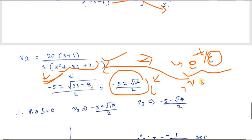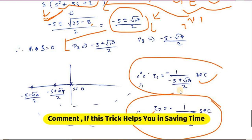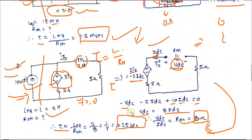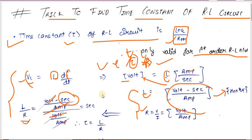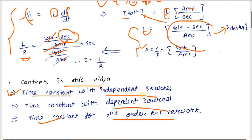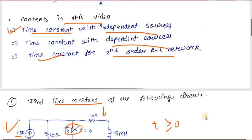From the two roots, we get two time constants for this second-order RL network: τ₁ = −1 / [(−5 + √17)/2] and τ₂ = −1 / [(−5 − √17)/2] seconds. A first-order RL network yields one time constant; a second-order RL network yields two. Use the L_equivalent/Rth formula for first-order circuits and Laplace transform for second-order and higher. Exam questions on second-order RL circuits are increasingly common, so be well prepared.